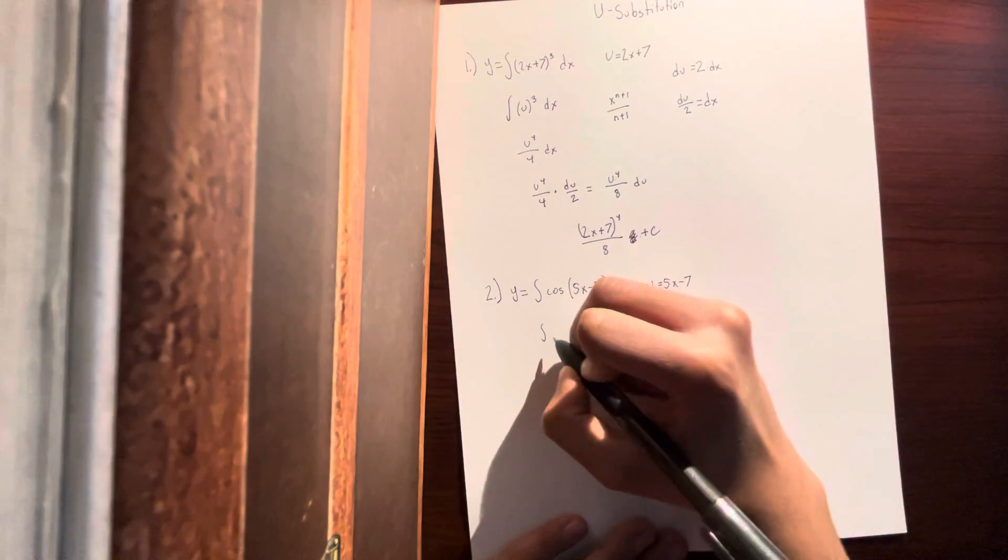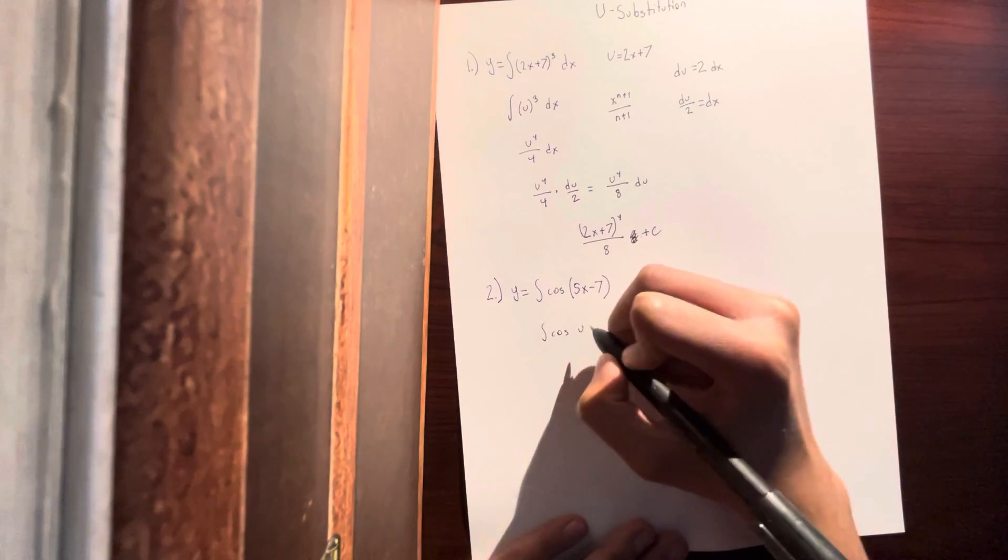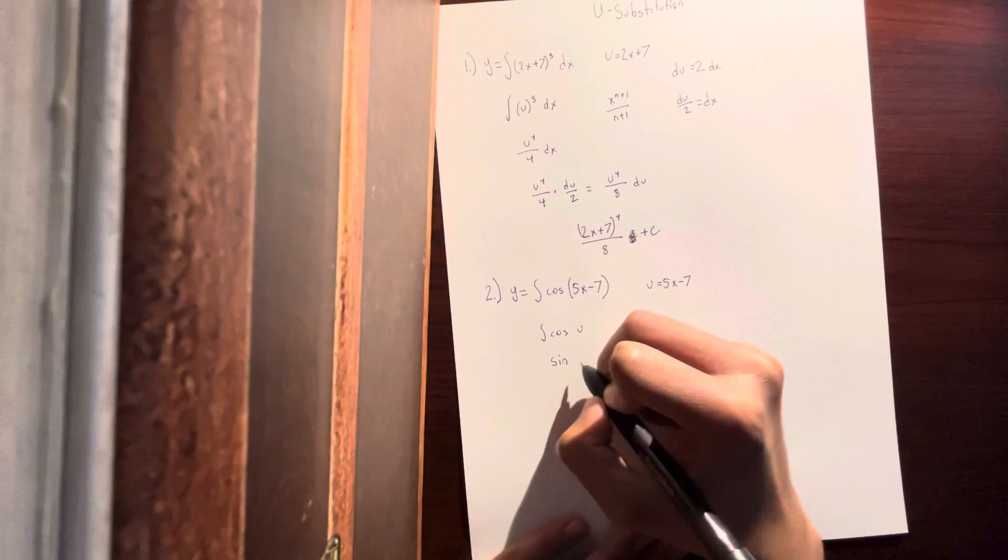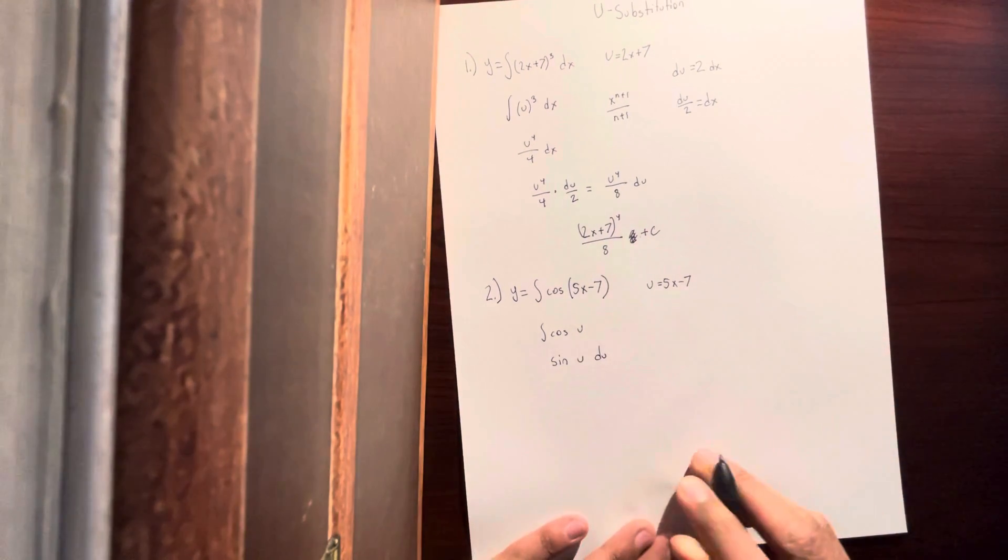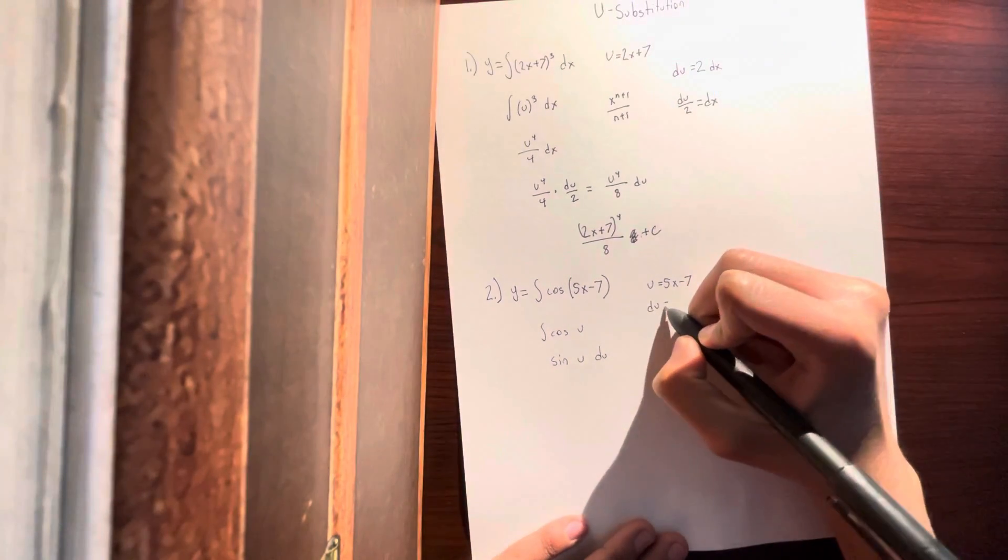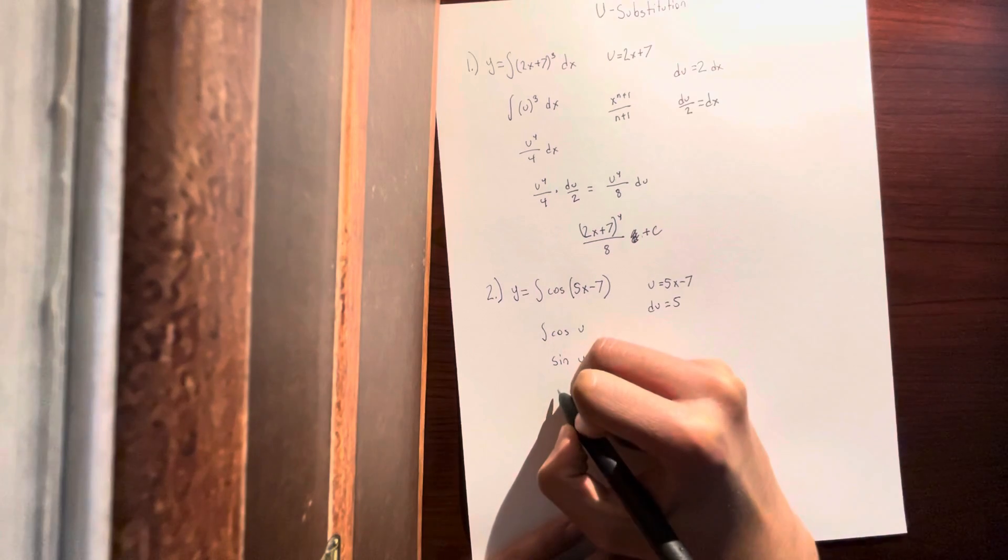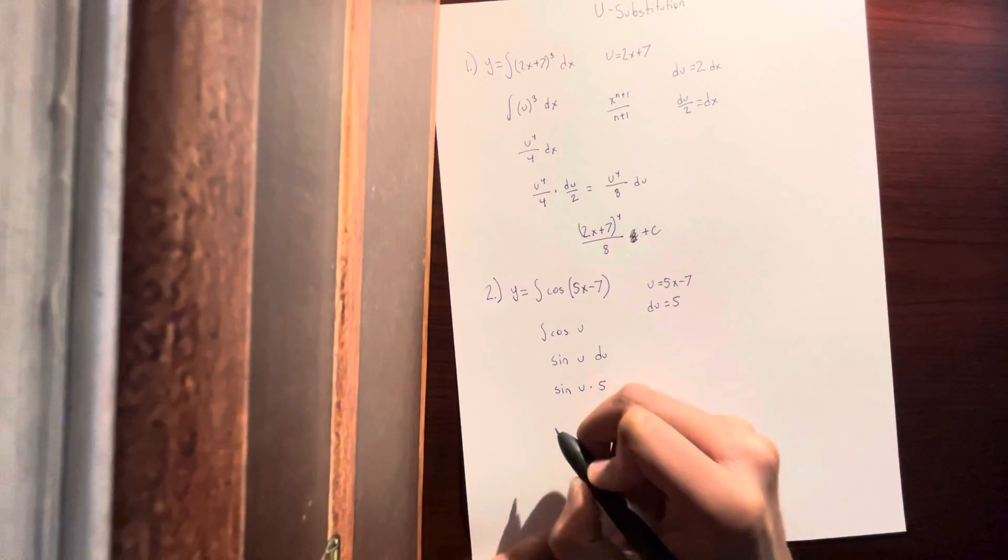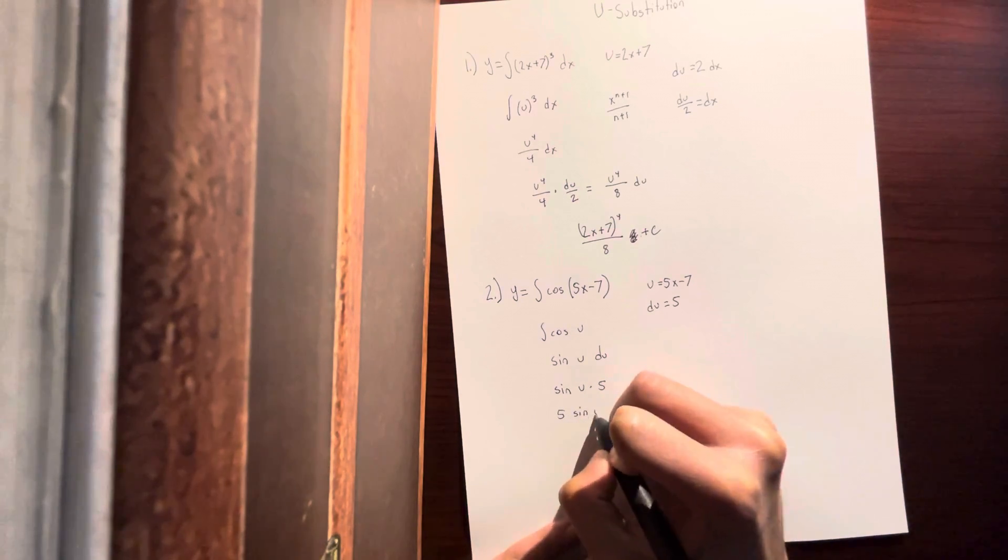So let's integrate this. Cosine u becomes sine u du. So what du would be equals 5. So it will be sine u times 5, and that would just be 5 sine u.